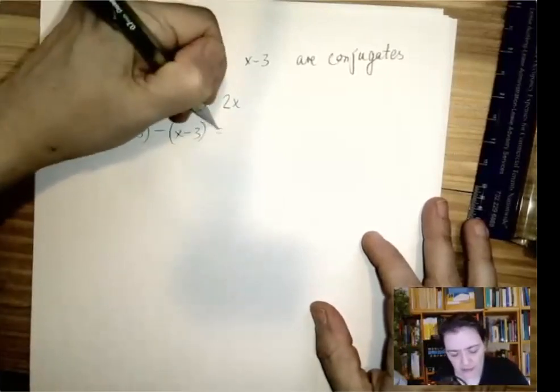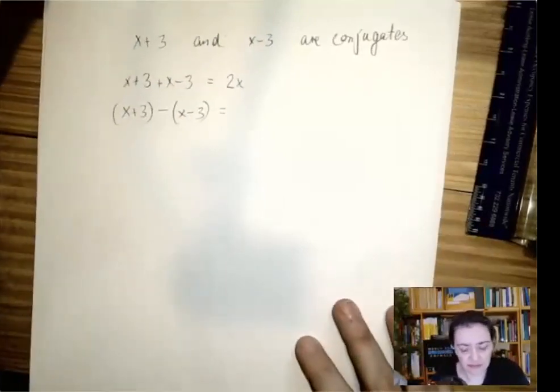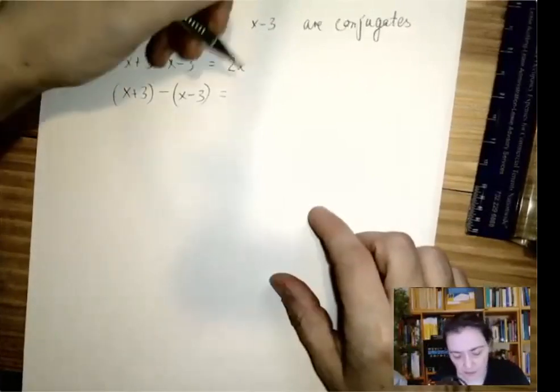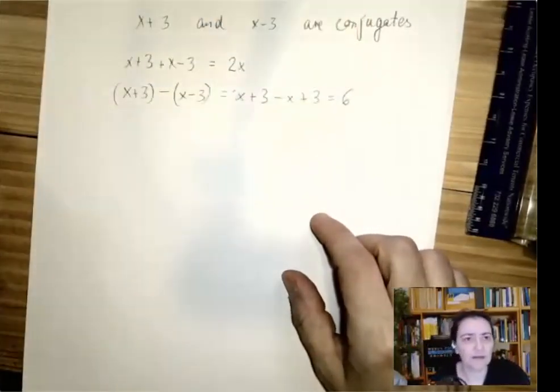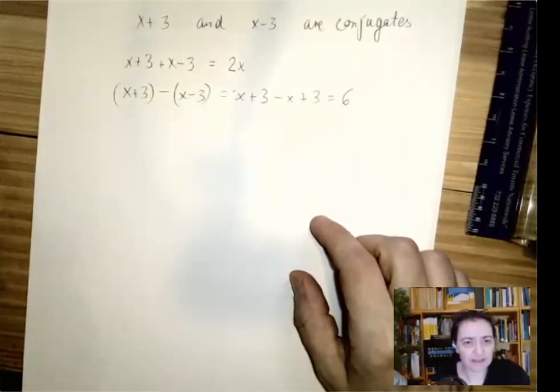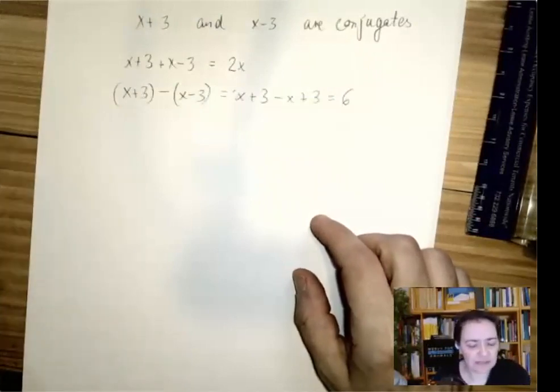When we subtract, then the terms that have the same sign will cancel out, and the other piece will double up. And when we multiply them together, we get the difference of squares theorem, because in FOIL, O and I will completely cancel out each other.